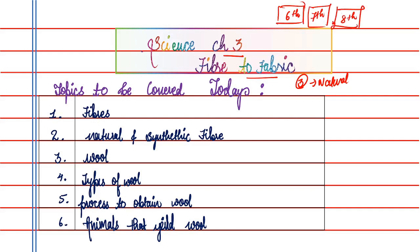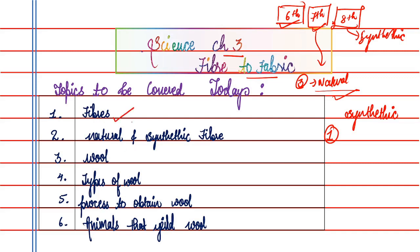This topic spans 3 classes: you have the introduction in class 6, natural fiber in class 7, and the whole synthetic fiber in class 8. Today we are going to study natural and synthetic fiber, wool, types of wool, the process to obtain wool, and animals that yield wool.